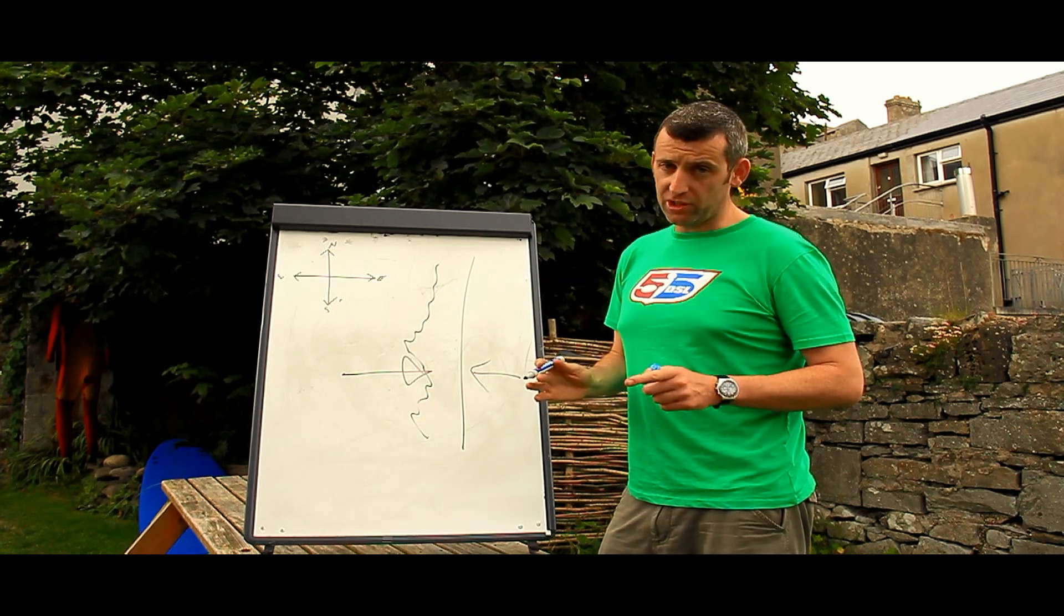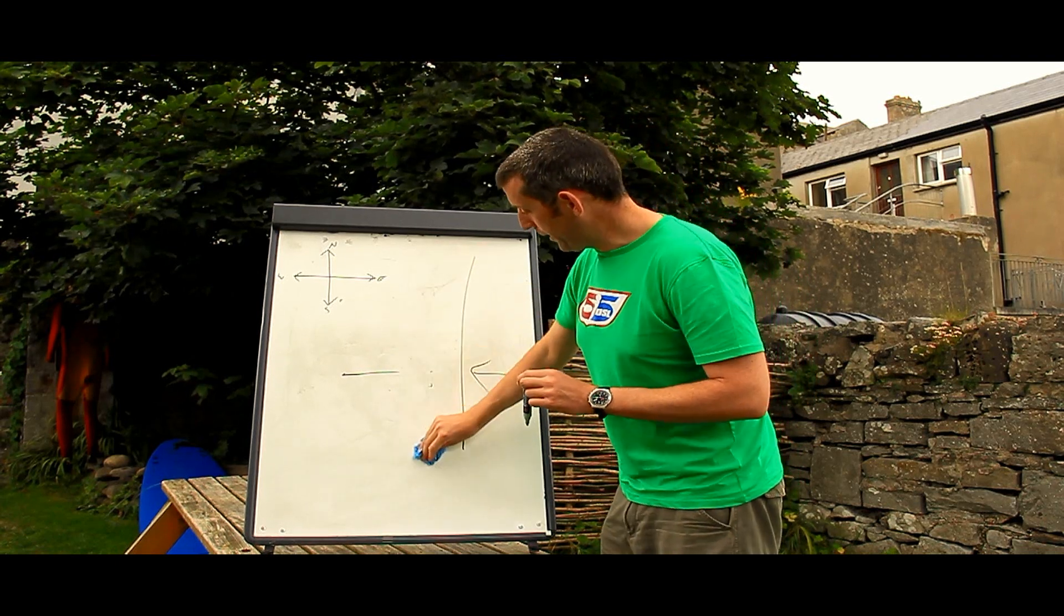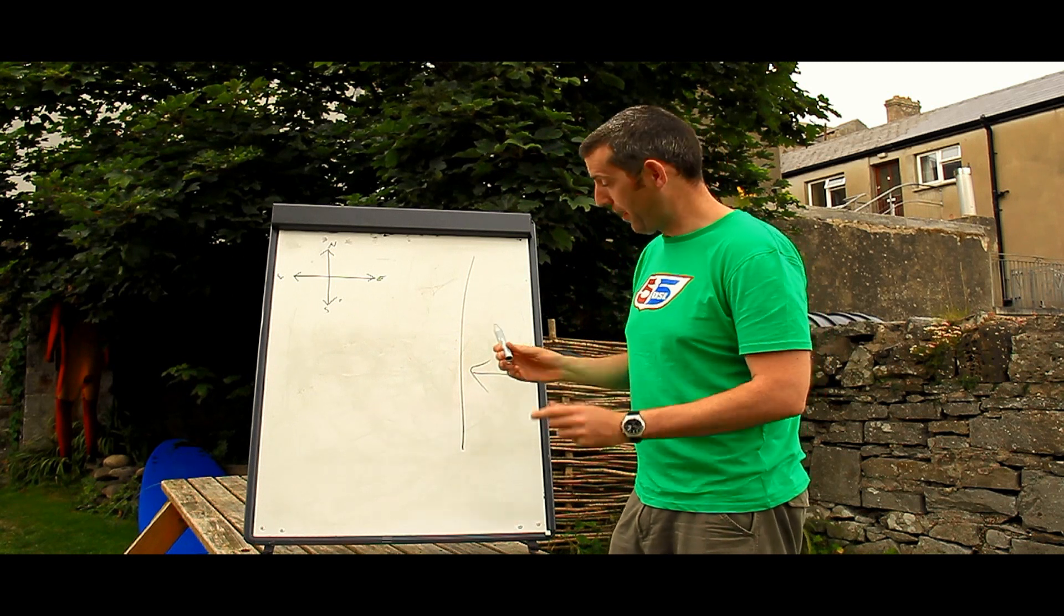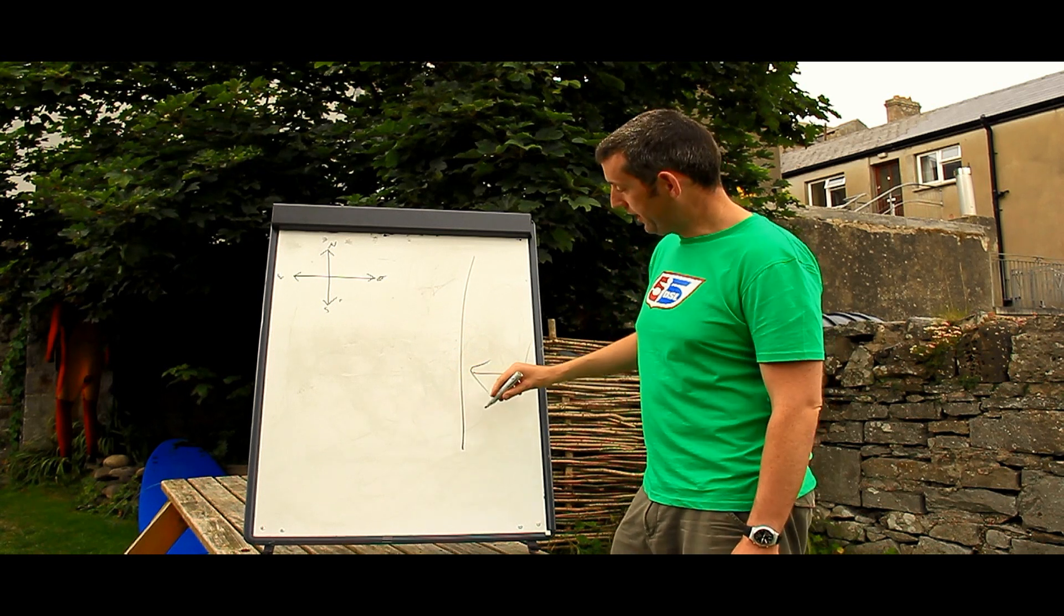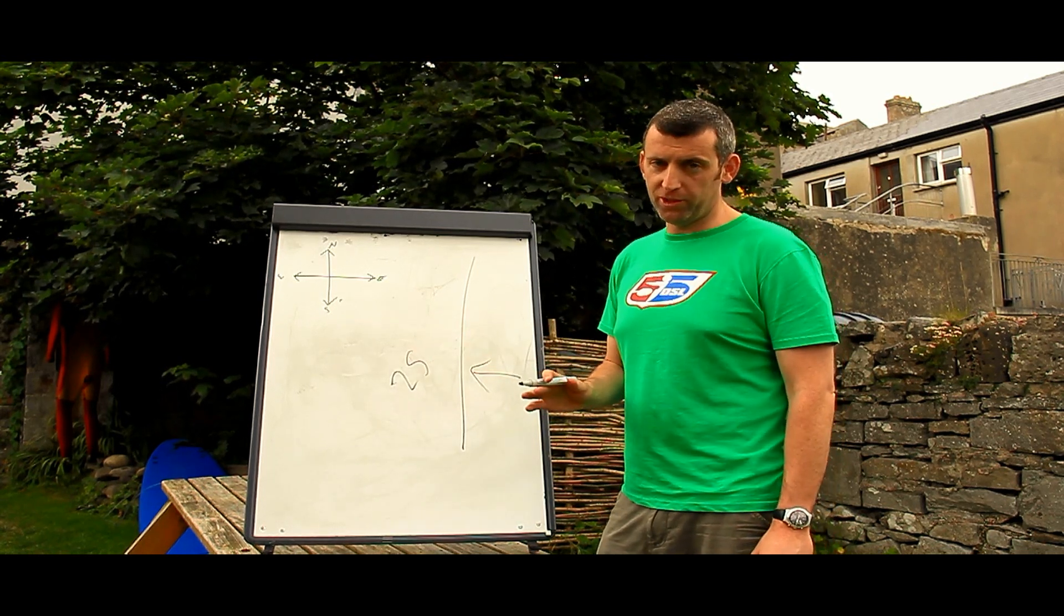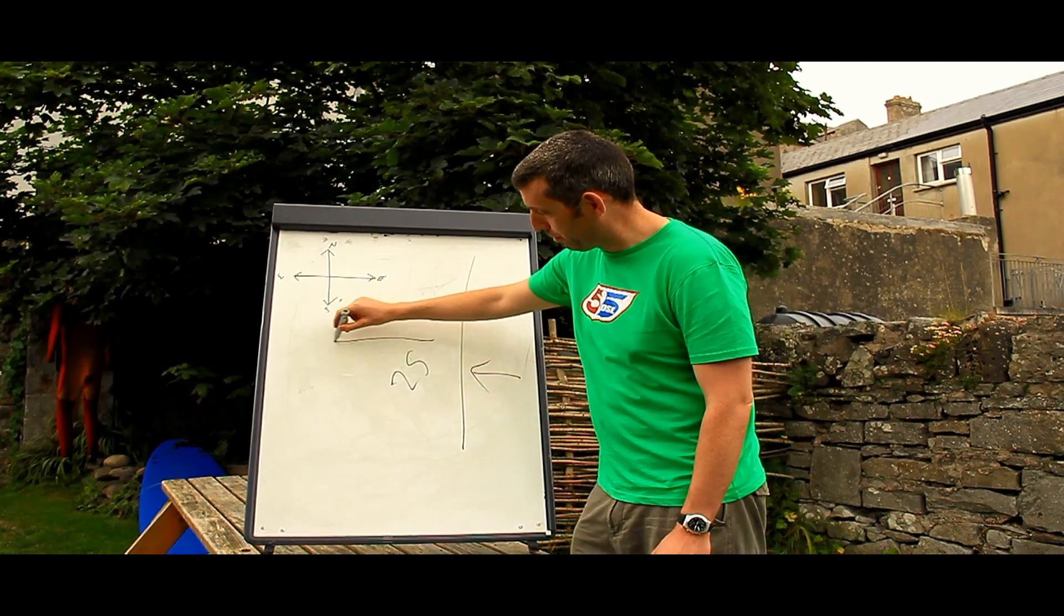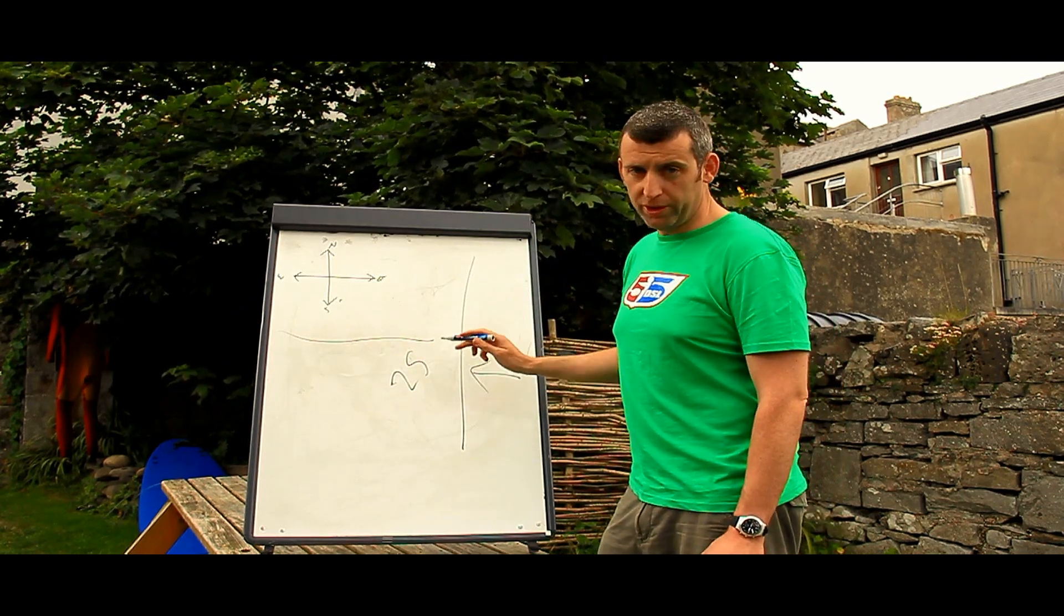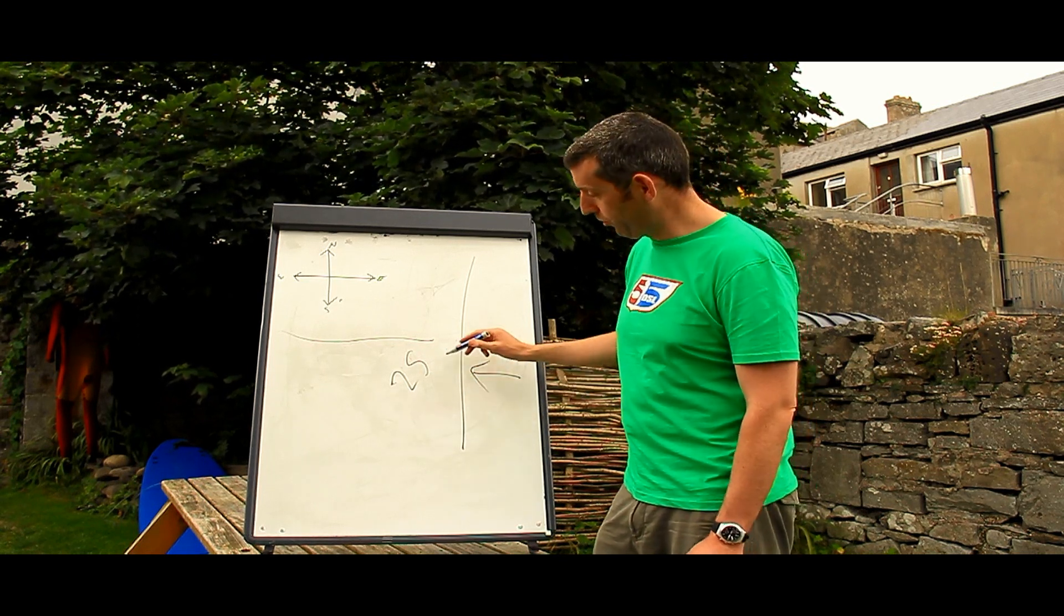Now wind direction is one thing but you always got to talk about wind speed. Speed is, like a lot of things, less is better. If you have five miles an hour offshore, perfect offshore conditions. If you have 25 miles an hour offshore you got a couple of problems. First of all it's going to be harder to catch the waves, secondly there's a hazard there that you can actually be blown out to sea.